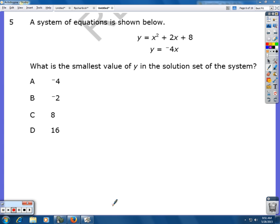A system of equations is shown below. Notice that one of them has an exponent, that's a square, so we'll have a quadratic or a parabola, and then the other one is linear. What is the smallest value of y in the solution set of the system?